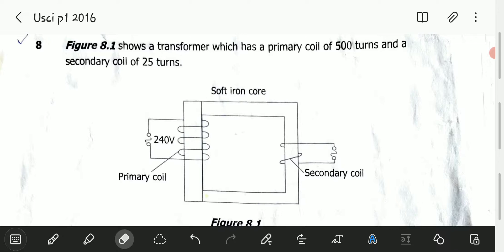Question 8 reads: Figure 8.1 shows a transformer which has a primary coil of 500 turns and a secondary coil of 25 turns.